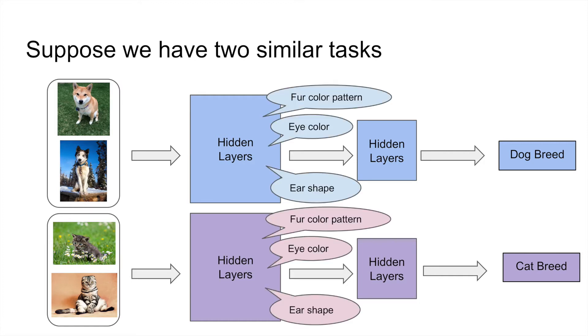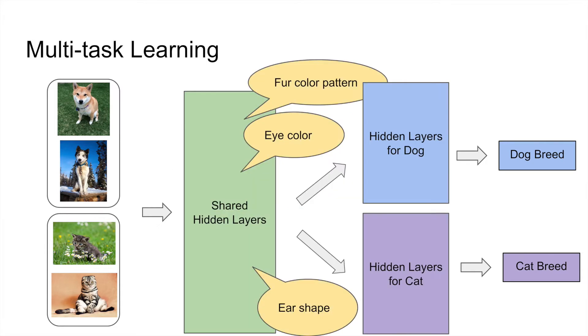The lower-level hidden layers of both models may learn some common features because the two tasks are similar. The basic idea of multi-task learning for neural network models is to share some lower-level hidden layers across multiple tasks to learn better general features.